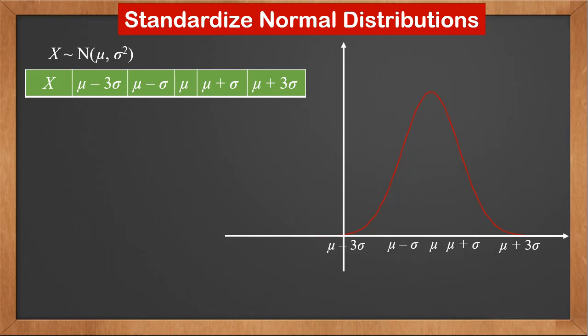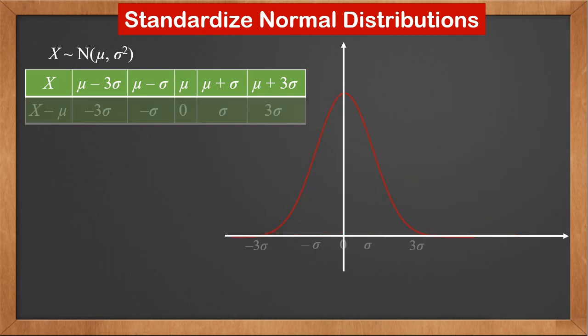First, let's do x minus mu. With this transformation, we can see that mu becomes 0, and the other 4 values become minus 3 sigma, minus sigma, sigma, and 3 sigma. This will make the graph symmetric about the y-axis.